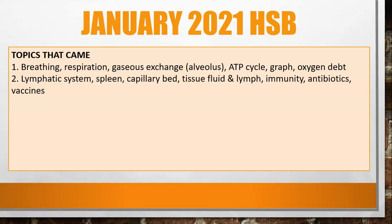The second question dealt with the lymphatic system — the function of the spleen, information on the capillary bed, how tissue fluid and lymph form, and a question on immunity particularly dealing with coronavirus. To finish off that question, they asked about antibiotics and vaccines.